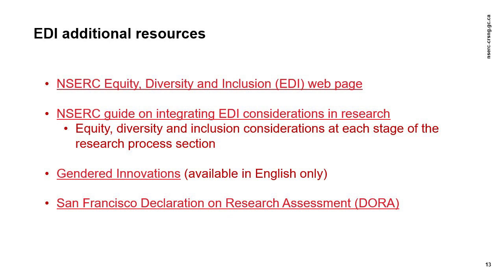The NSERC EDI webpage houses the Tri-Agency Statement on EDI and provides an overview of NSERC's EDI action plan, as well as NSERC EDI programs, relevant news articles, and resources. The Equity, Diversity, and Inclusion considerations at each stage of the research process section of the NSERC guide on integrating EDI considerations in research, available on the NSERC website, is an important resource that you should consult while completing your application. The Stanford University-associated website, Gendered Innovations, is a peer-reviewed project which provides helpful tools to researchers, including examples and concrete illustrations of how sex and gender analysis leads to innovation. Finally, the San Francisco Declaration on Research Assessment, or DORA, webpage, which will be covered in more detail in a moment, provides information on the agency's commitment to improving ways in which the outputs of scholarly research are evaluated.